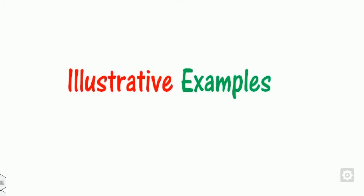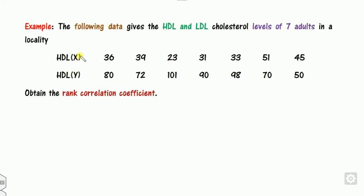I will explain this with the help of a numerical example. The following information gives the HDL and LDL cholesterol levels of seven adults in their locality. You need to find the rank correlation coefficient.